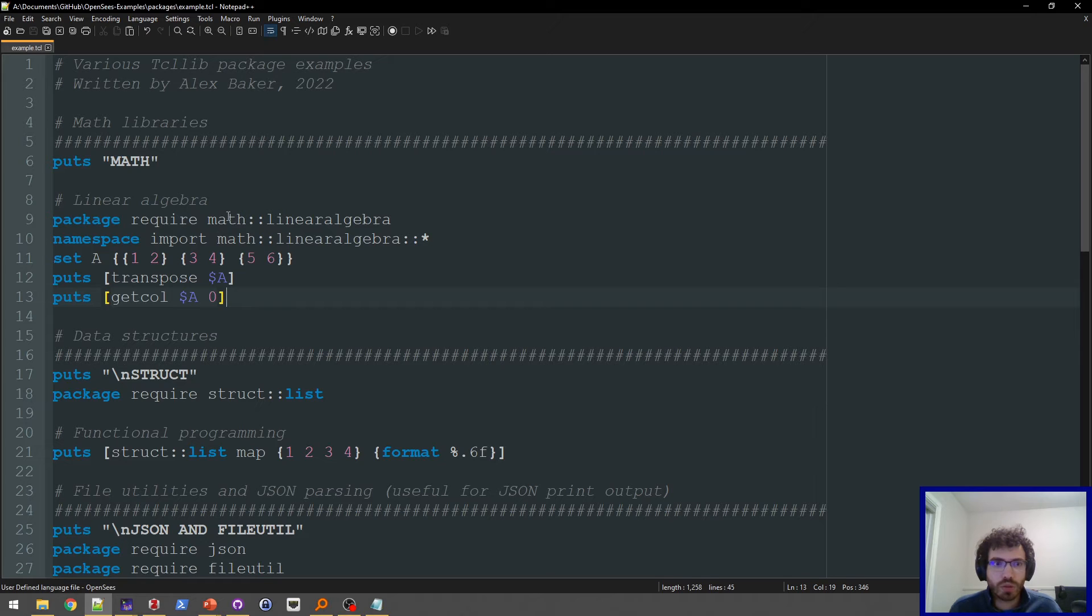For example, you can do some linear algebra routines. You can transpose a matrix, or you can access a column. There's a whole bunch of other things—you can get the determinant of a matrix, solve a system of equations. There's a whole lot more in that package. And there's other math libraries: calculus, statistics, you name it.